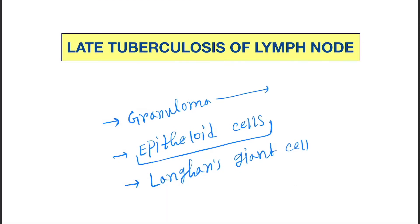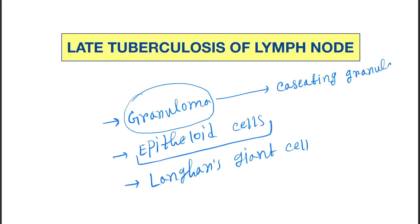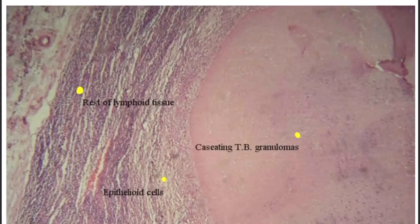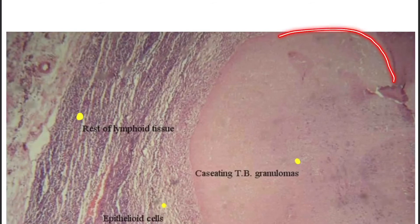Now because it is late, it is going to the chronic stage. The granuloma area will form a caseating granuloma by caseous necrosis. The caseating granuloma has a cheese-like appearance.